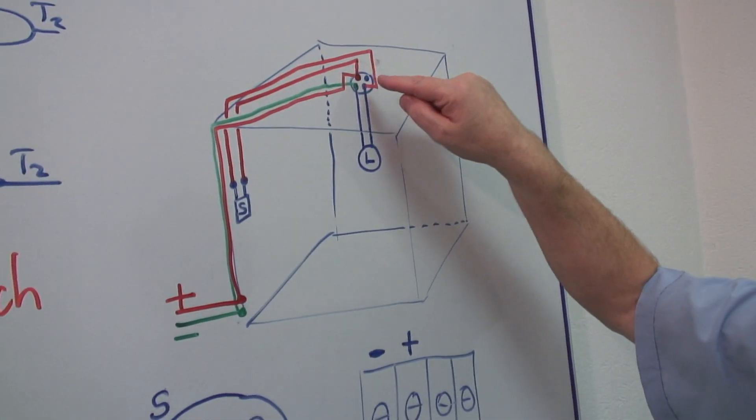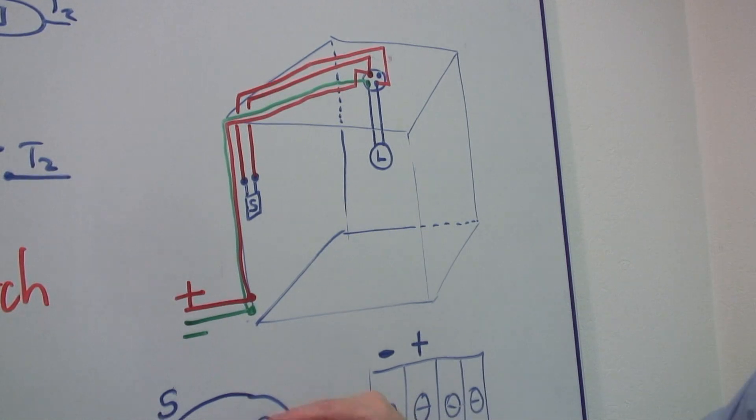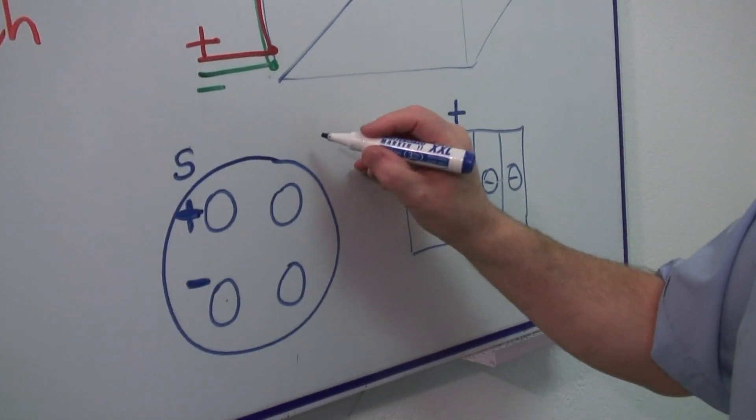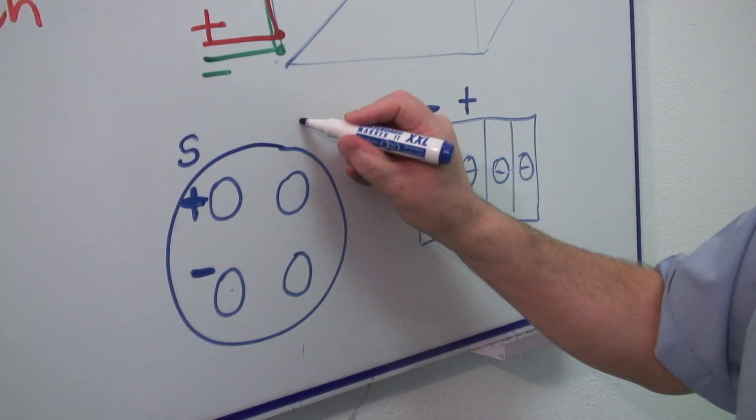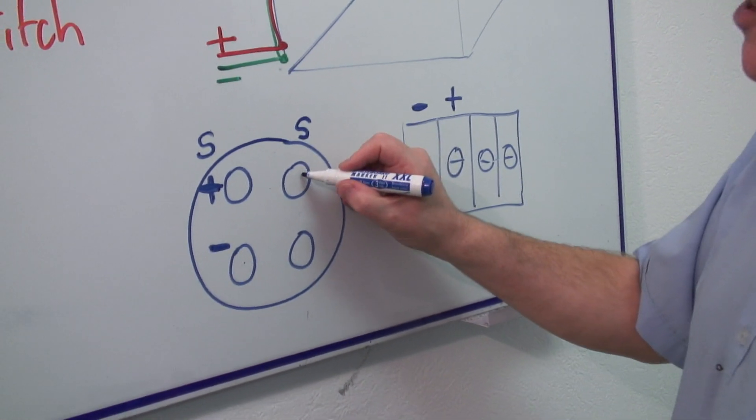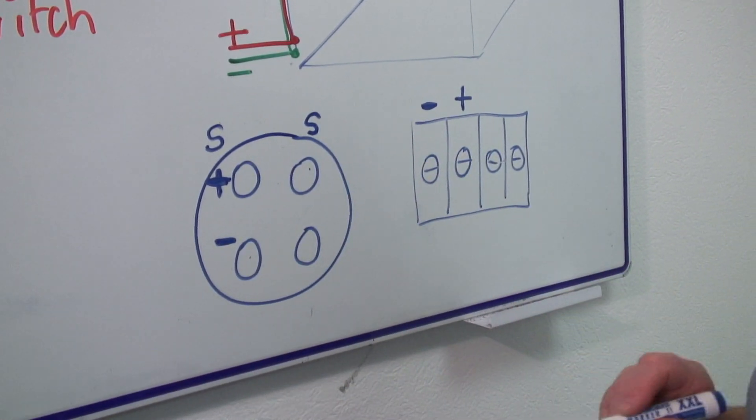One of them, it doesn't matter which one, goes to that. The other one goes to this. So, that's the other switch wire. So, the switches go to there and there.